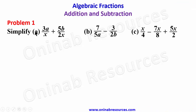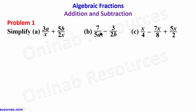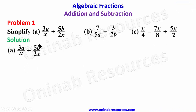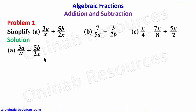Problem one: we have to simplify (a) 3a over x plus 5b over 2x, (b) 7 over 5a minus 3 over 2b, and (c) x over 4 minus 7x over 8 plus 5x over 2. We start with the solution from part (a) and we look at the denominators of the fractions. The denominator here is x while the other is 2x.